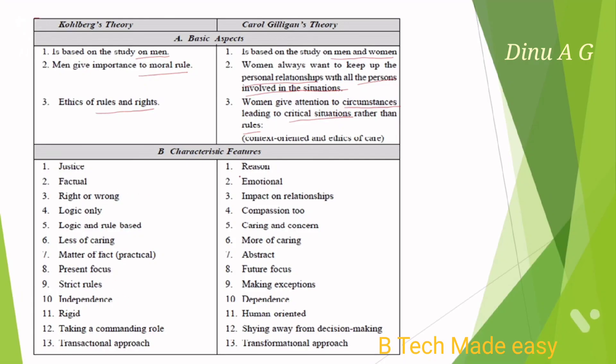Kohlberg's theory characteristics include: no emphasis on care, justice-based thinking — right or wrong, logical reasoning, less caring, and strict rules. In Kohlberg's model it is male-oriented.